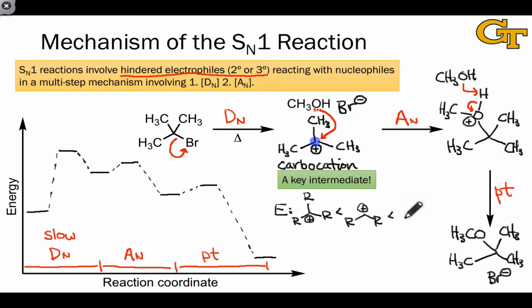Secondary carbocations are far more stable than primary carbocations, which are themselves more stable than methyl carbocations. On a reaction coordinate diagram, the primary and methyl carbocations would be far higher in energy than where we've positioned the tertiary cation, which is already higher in energy than starting materials.